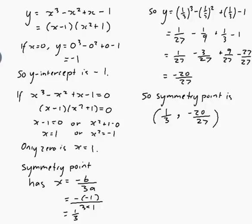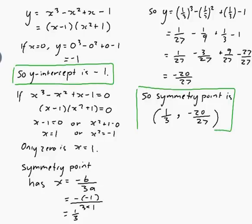So let's just check that I've done everything. I need to find the y-intercept, which is here, and the symmetry point, which is here, and the zeros, and there's only one of them. And then I just need to sketch it. So all I have left is to sketch my graph. So let me just make a new page to do that.